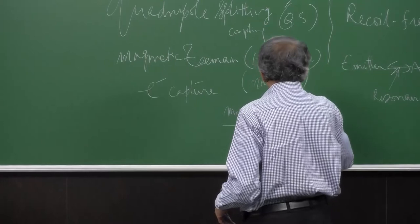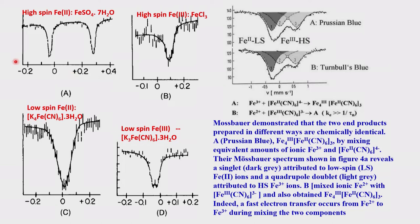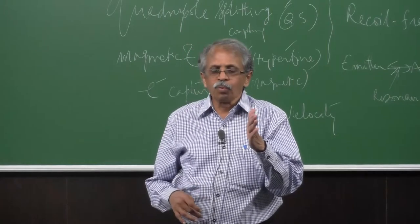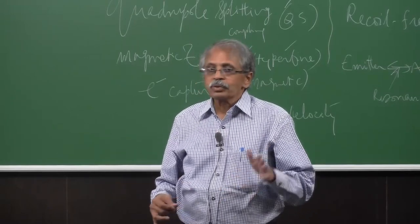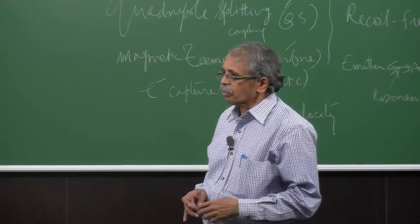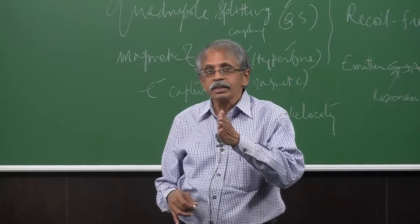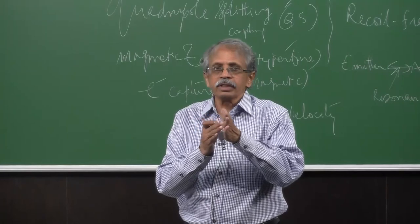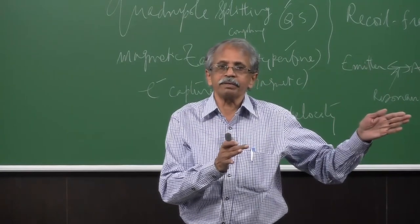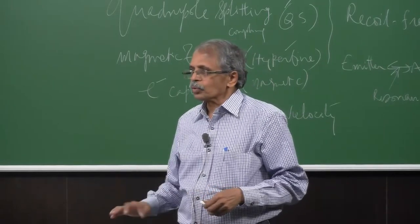The x-axis is in mm per second, which is velocity units. Velocity refers to the motion of the source toward or away from the absorber (sample). The minus sign means the emitter is moving away from the absorber; positive means moving toward it. Those are the conventions used on the x-axis of a Mössbauer spectrum.